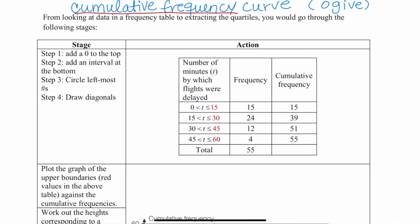So the four steps are, you're going to add a zero to the top of the cumulative frequency column. You're going to add an interval to the bottom. And like I said, in reality, I just care about repeating this last number. You're going to circle these leftmost numbers, and you're going to draw diagonals to the cumulative frequency column.